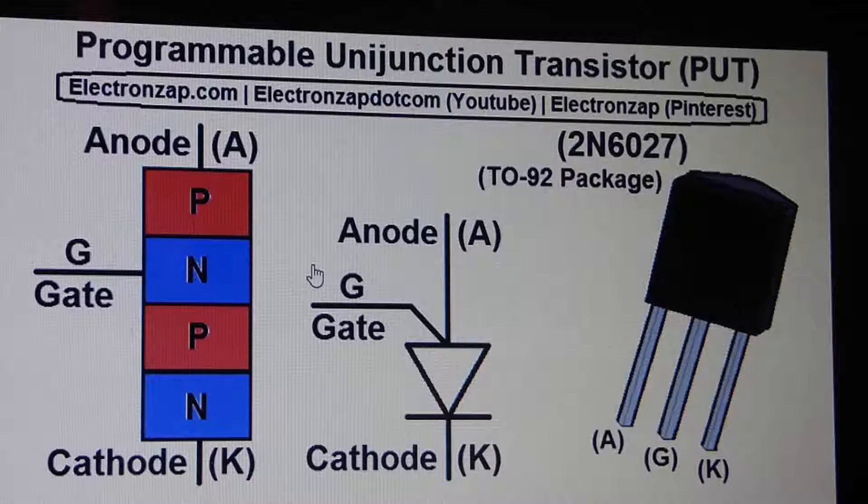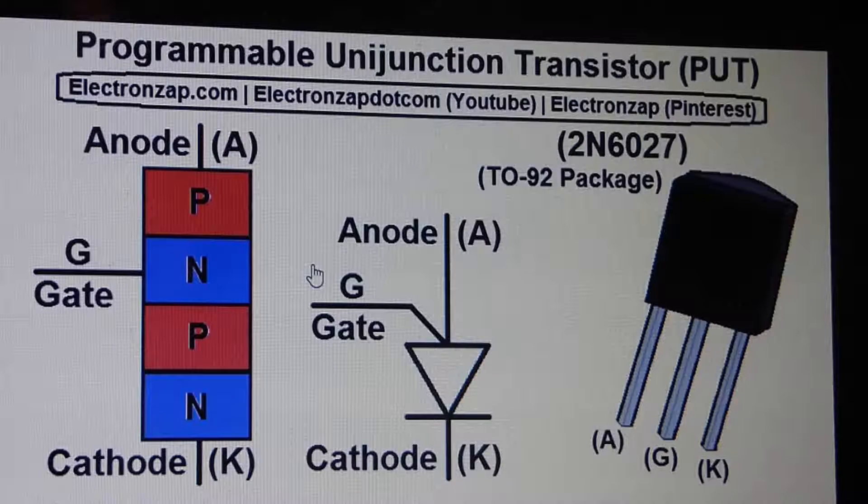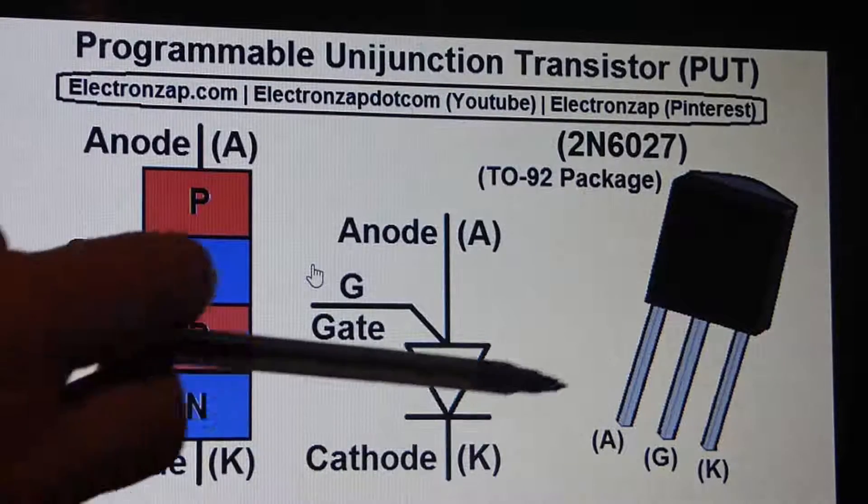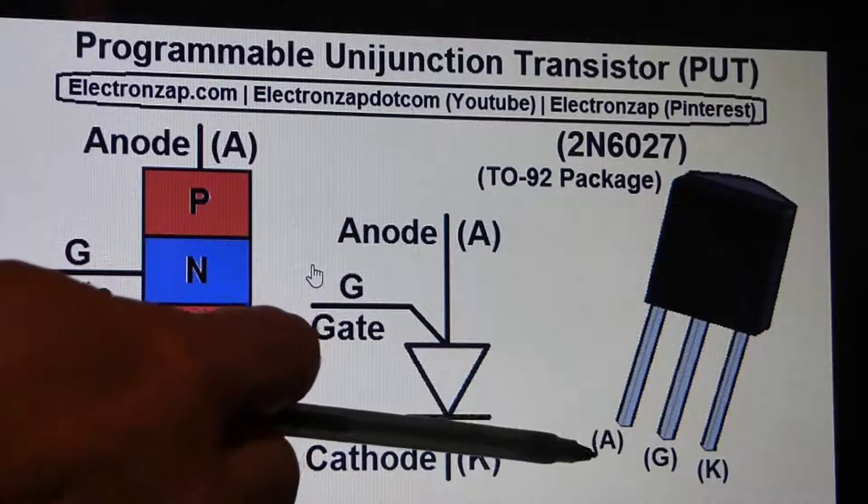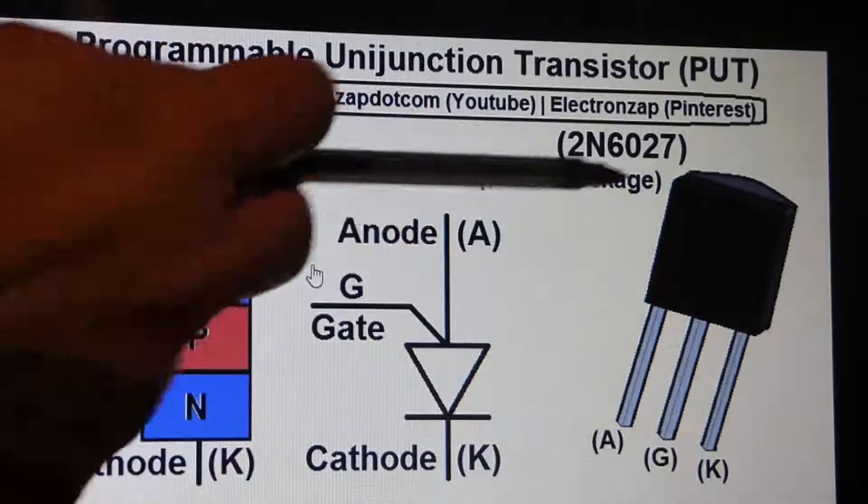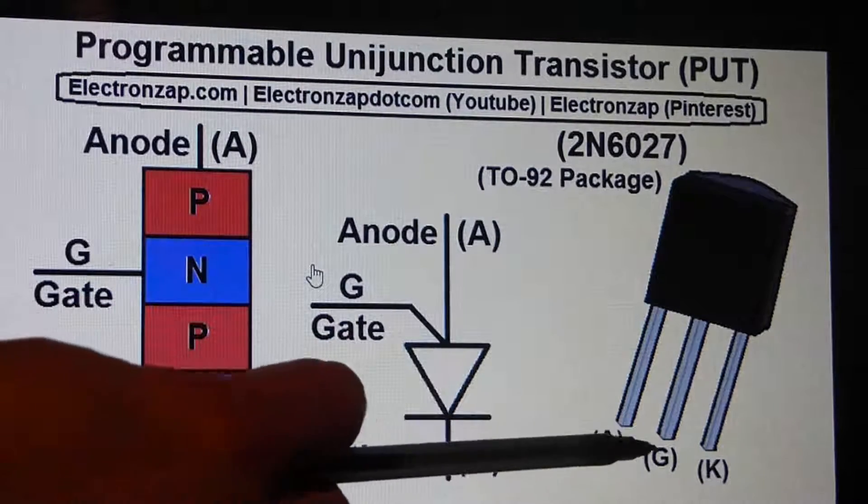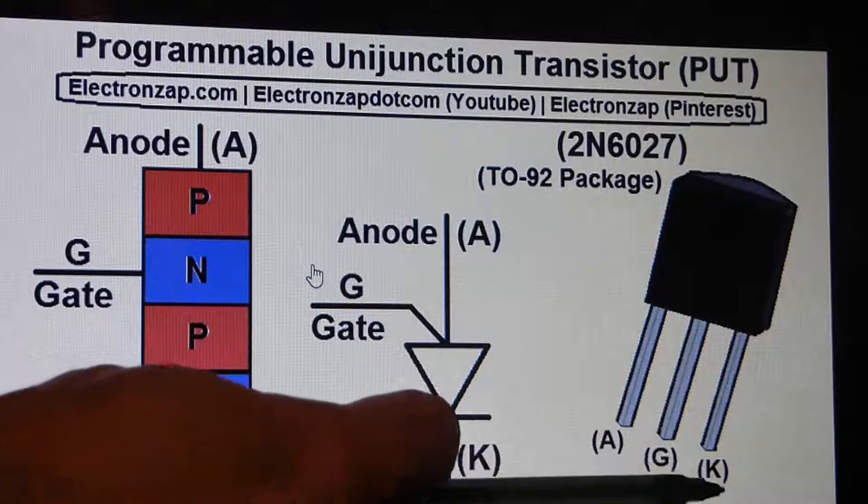Now the programmable unijunction transistor looks like a regular transistor, but the pins here, when you look at the front end, the one on the left is the anode, the middle pin is the gate, and the other pin is the cathode.